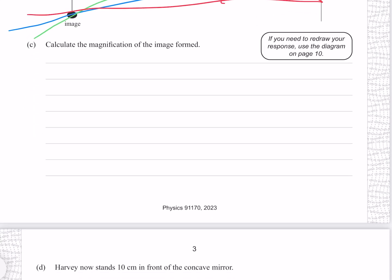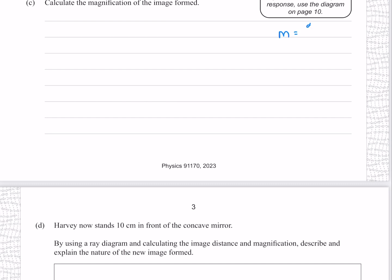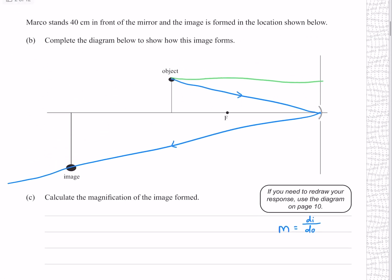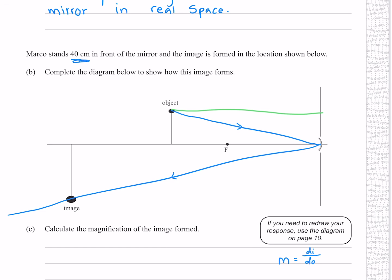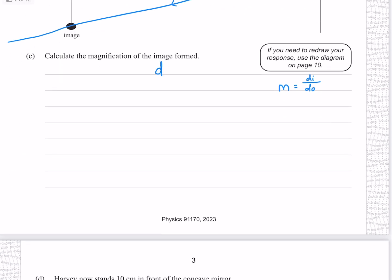Calculate the magnification of the image formed. Magnification can be written as the distance of the image divided by the distance of the object, where we could also use the heights. But since we already have the distance of the object 40cm, we might as well use the distances. The trouble is we don't have the distance of the image, so we need to find it.